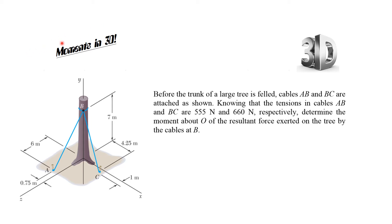This is a three-dimensional example. Before the trunk of a large tree is pulled down, cables AB and BC are attached as shown. We want to pull this tree over and make sure it doesn't fall on your car or house. Cables AB and CB are going to help pull the tree in the right direction. Knowing the tension in cable AB and BC are 555 newtons and 660 newtons, find the moment around O — the origin of our coordinate system — where we uproot the tree at the ground, and the resultant force exerted on the tree by the cables at B.